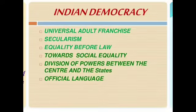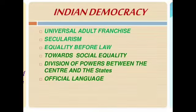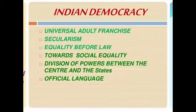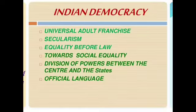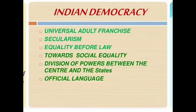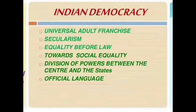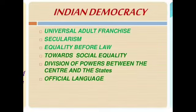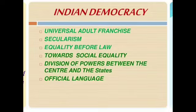Now, as Indian democracy, there are 6 points which we need to discuss. Number 1, UAF, that is universal adult franchise. Number 2, secularism. Number 3, equality before law. Number 4, towards social equality. Number 5, division of powers between the centre and the state, and number 6, official language.